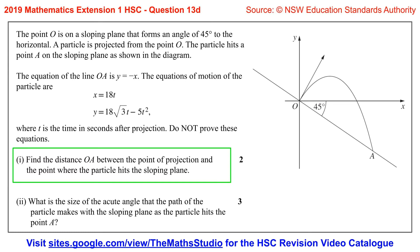Question 13D. The point O is on a sloping plane that forms an angle of 45 degrees to the horizontal. A particle is projected from the point O. The particle hits a point A on the sloping plane as shown in the diagram.